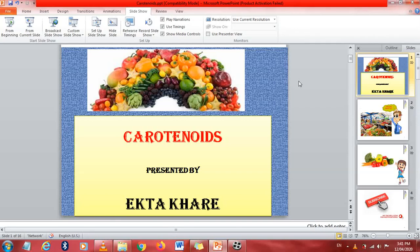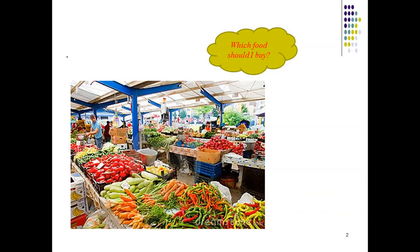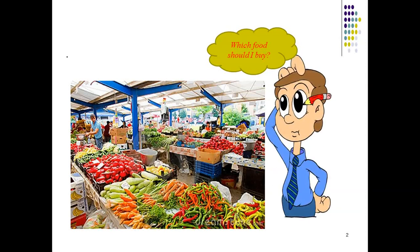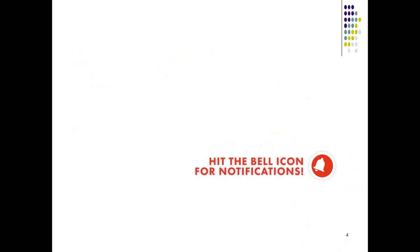Hello everyone. Today's topic is carotenoids. When you are in a local market, do you stop to notice the variety of colors in the food and vegetables around you? From vibrant orange and yellow to purple, deep red tomatoes, and dark leafy green vegetables, colors are everywhere. These pigments are called carotenoids.